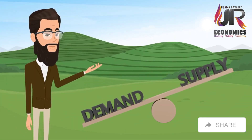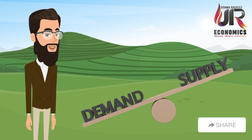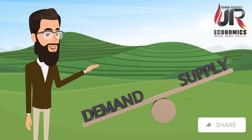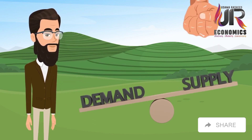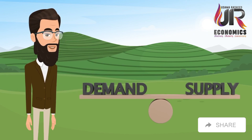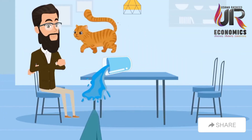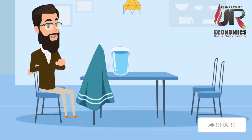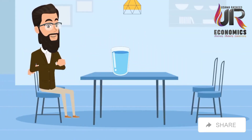But fear not. Just as equilibrium can be disrupted, it can also be restored by finding balance again — like fixing that seesaw, or cleaning up after the cat. Things settle down, and equilibrium returns.